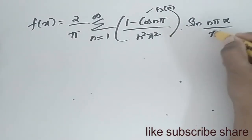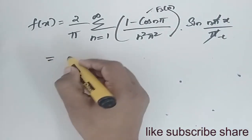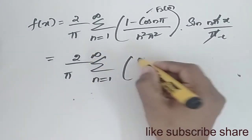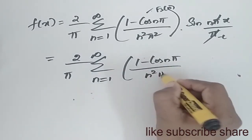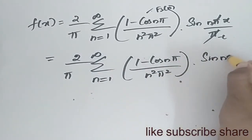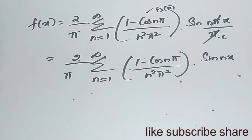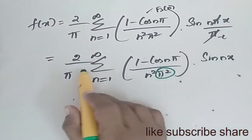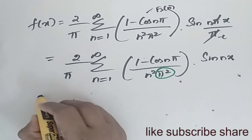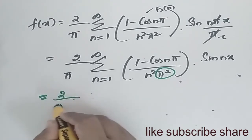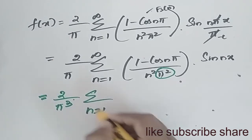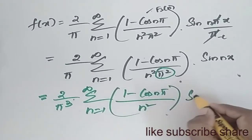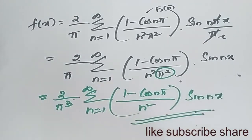This simplifies to (2/π) times the summation from n = 1 to infinity of (1 - cos nπ) / (n²π²) times sin(nx), which equals (2/π³) times the summation from n = 1 to infinity of (1 - cos nπ) / n² times sin(nx).